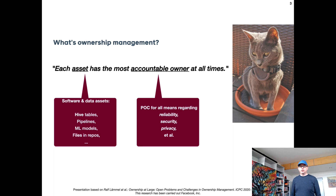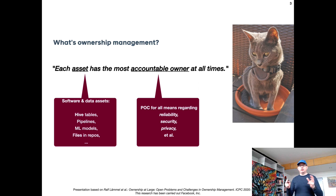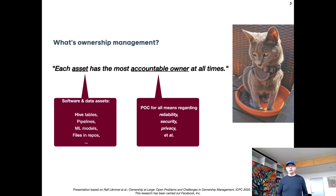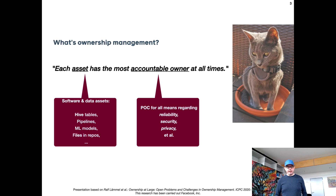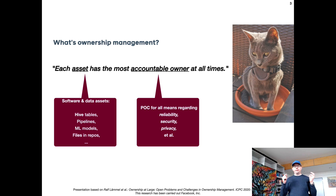So what is ownership management? The simple slogan is: each asset within a software company has the most accountable owner at all times. We like to have an owner — a responsible person or a team — for any given asset. An asset might be something like a source code file, but also database tables, pipelines in a big data context, ML models, or any sort of software or data artifact in a company.